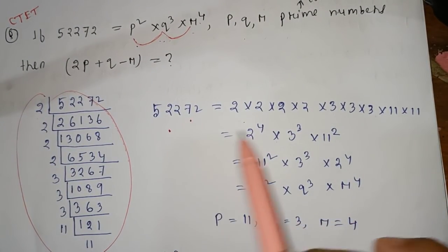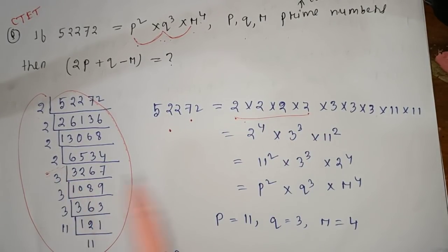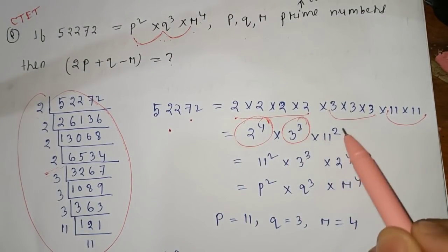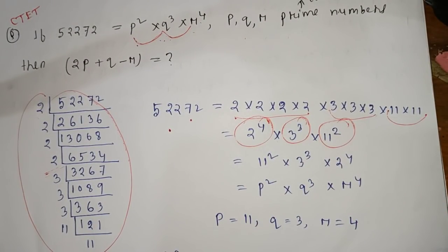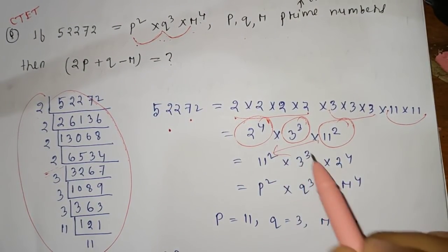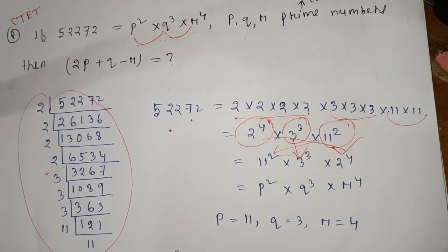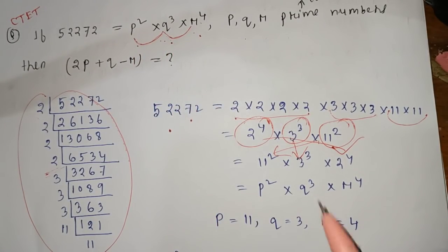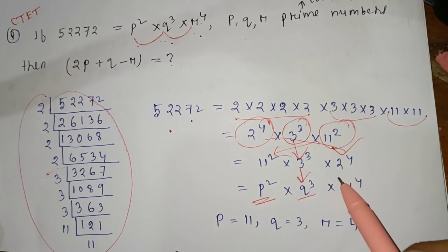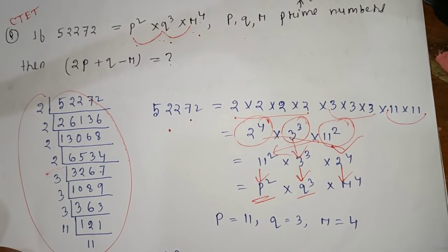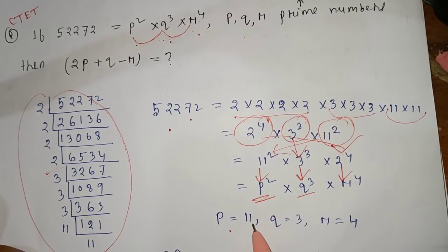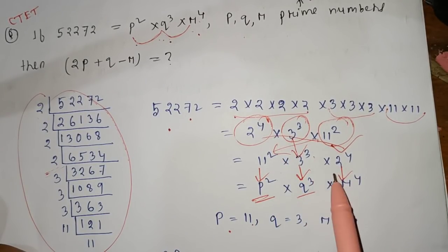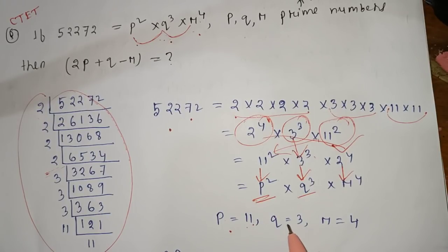So 52272 — we do the prime factorization. We get 2 to the power 4, 3 cube, and 11 square. The first term is 3 cube, 2 to the power 4. The second form is p square into q cube into r to the power 4.